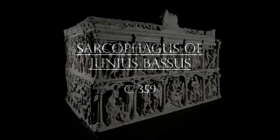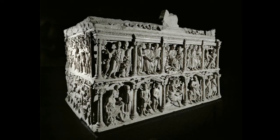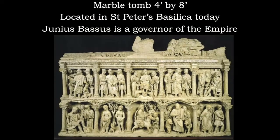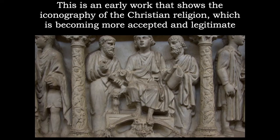The next work is the Sarcophagus of Junius Bassus — an incredibly carved block of marble, roughly four feet by eight feet, today found in St. Peter's Cathedral. Junius Bassus was a governor of the Roman Empire during the time when Constantine was making Christianity not only acceptable but legal, so we have this early work with a lot of Christian iconography. Christ is depicted as fairly young — he doesn't even have a beard — and his feet rest on the head of a river god, one of the pagan gods, showing the triumph of Christianity.